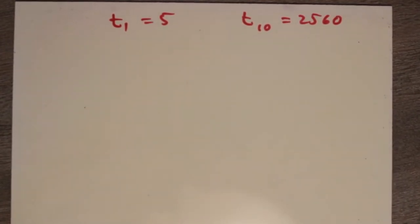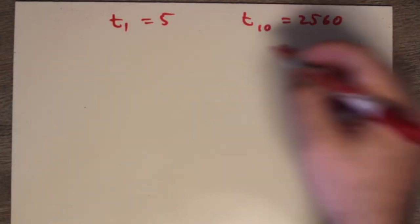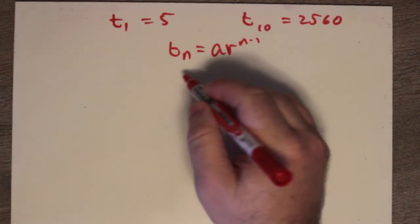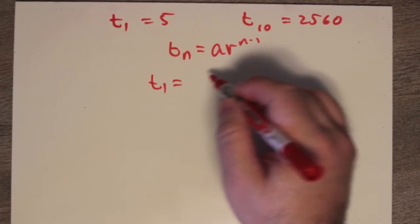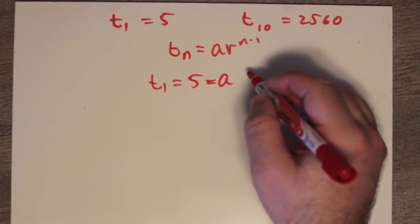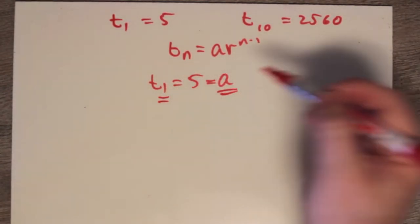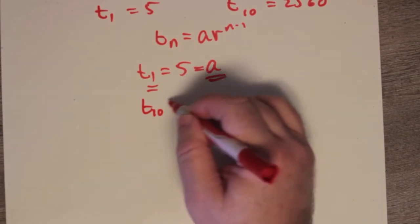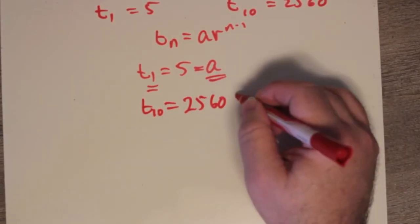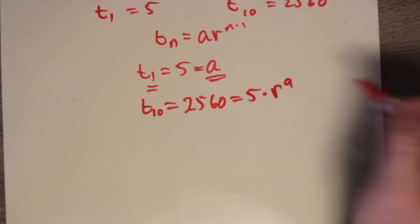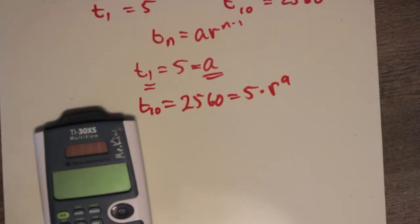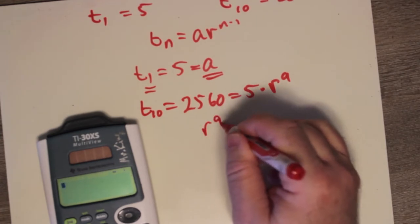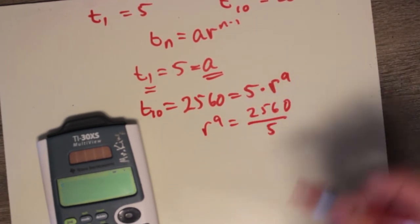The next question: t1 equals 5 and t10 equals 2560. Remember the nth term is a times r to the power of n minus 1. t1 equals 5, which is just a, since a is always t1. For t10: 2560 equals 5 times r to the power of 9. Dividing both sides by 5, r to the 9 equals 2560 divided by 5.